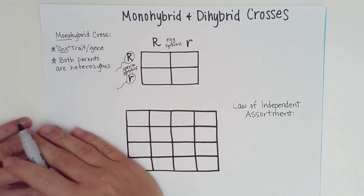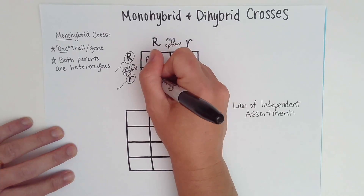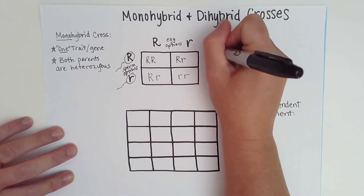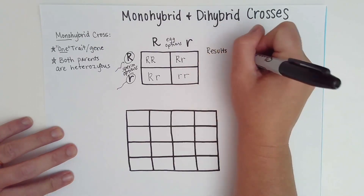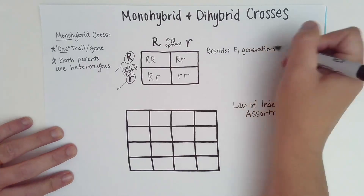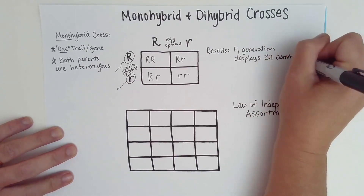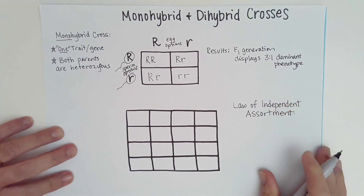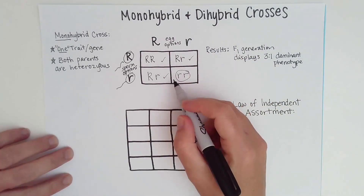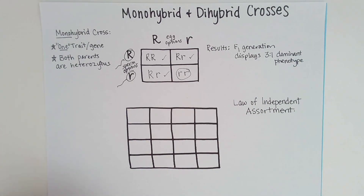You can see that both parents are hybrids. When they are crossed — a sperm fertilizes an egg — you end up with the ratio we've discussed in parts one and two. The results of this monohybrid cross show that the F1 generation will always display a three to one dominant phenotype ratio. In this case, we're looking at round versus wrinkled seeds — three round seeds to one wrinkled seed, so one of the four offspring would display the recessive phenotype.